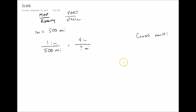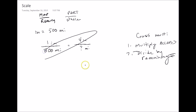So remember, our first step is you multiply across. The second step is we divide by the remaining number. Alright, so 500 times 4 is 2,000. Divide by the remaining number. So 2,000 divided by 1 is 2,000. And so our distance, when we measure 4 inches, is equal to 2,000 miles.